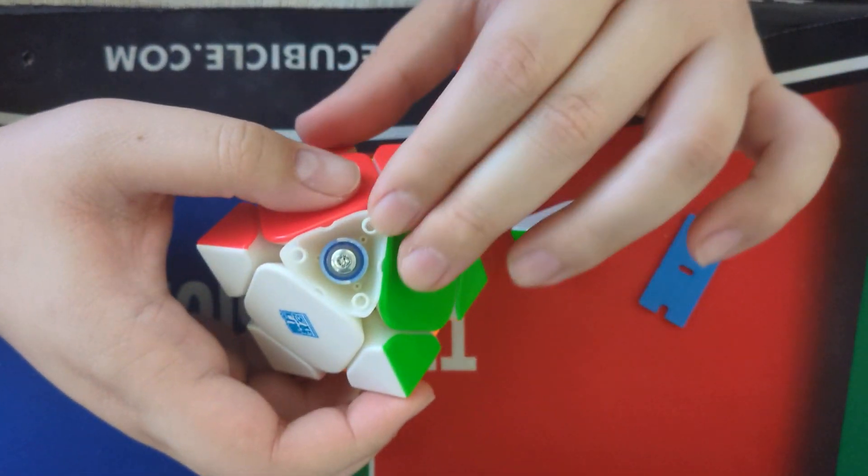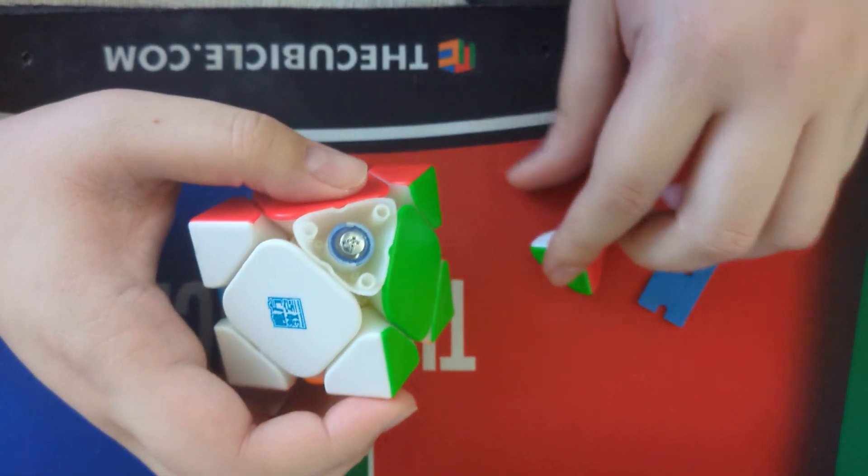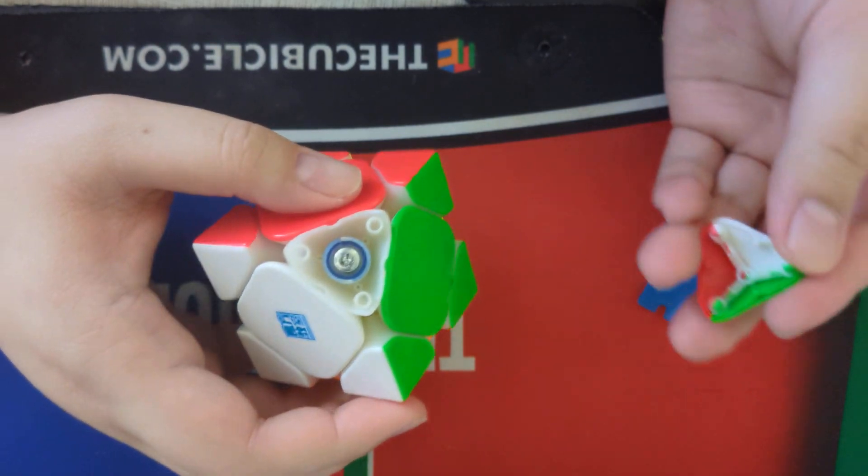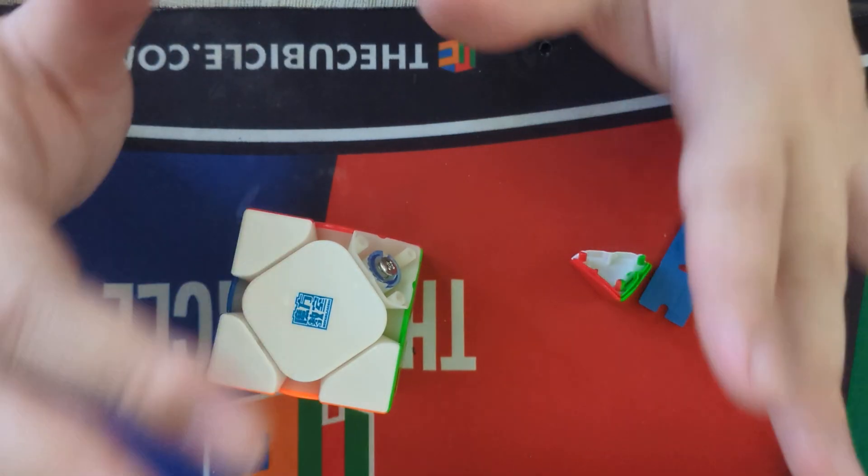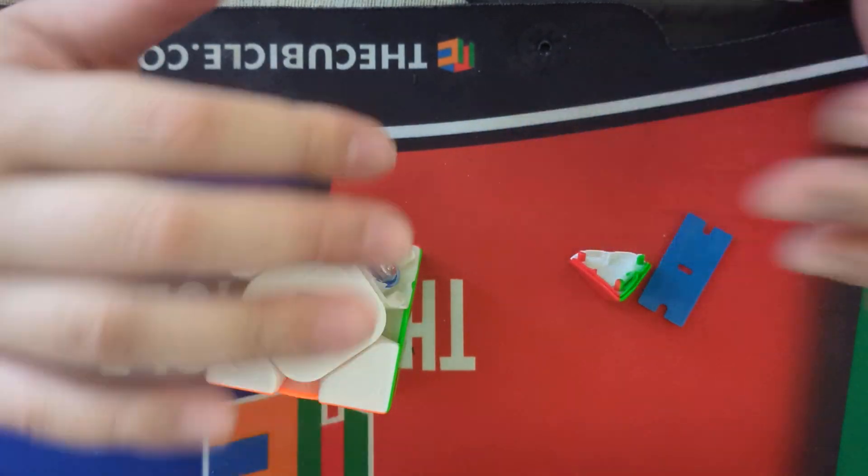That's why we want to let the glue dry completely. Because if we did it while it was still wet, this would be permanently fused onto here and we can't make any more adjustments. Again, we're just trying to introduce more material, not permanently fuse it together.